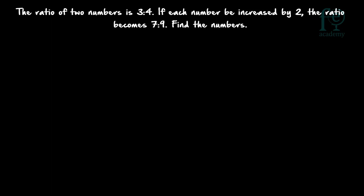How to do these kind of problems? The simple method is to assume the numbers be equal to 3x and 4x. Then when you are increasing by 2, so 3x plus 2 and 4x plus 2, your new ratio becomes equal to 7 by 9. You can cross multiply, solve for x, and from there find out the two numbers. So even though this is simple, it is a lengthy method.